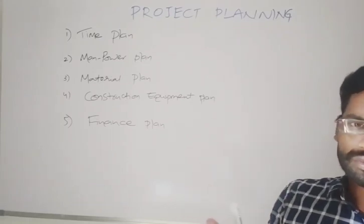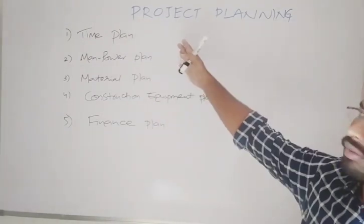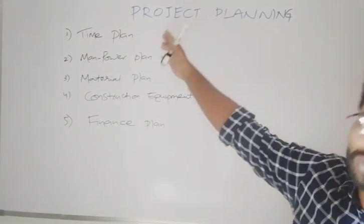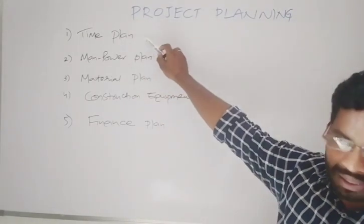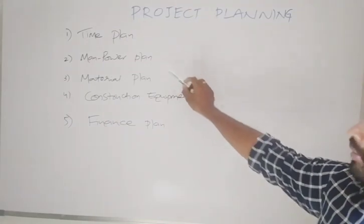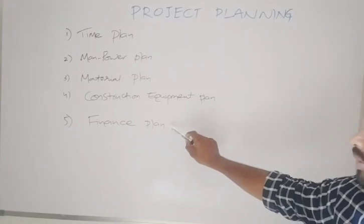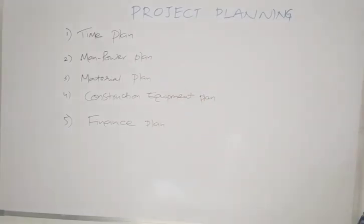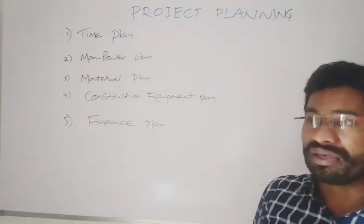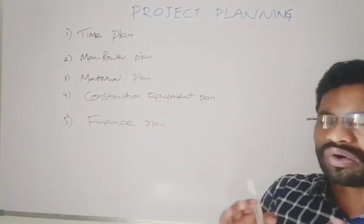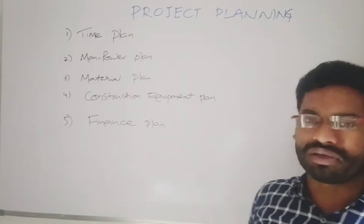Based on these planning systems we are going to complete the project; otherwise there may be difficulty in completing the project. Coming to the time plan — in the time plan there are different types of methods for how you are going to complete the project based on time. It may be one year, maybe six months, or maybe two, three, or five years.